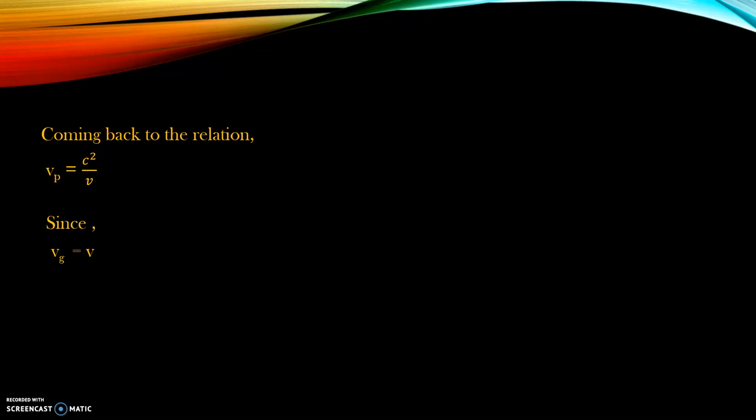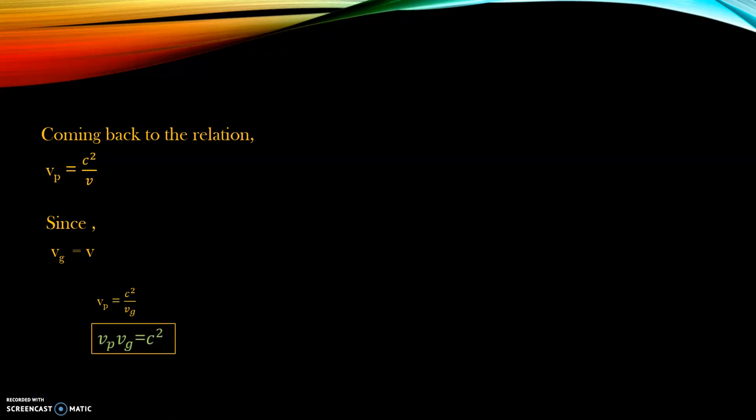Now let's go back to the relation vp is equal to c squared by v once again. We have already known that the velocity of the particle is exactly equal to the group velocity. So if I replace the velocity in this earlier equation with vg, I may derive a new relationship between the phase velocity and group velocity, which we see as vp into vg is equal to c squared — meaning the product of the phase velocity and group velocity is equal to the square of the velocity of light.